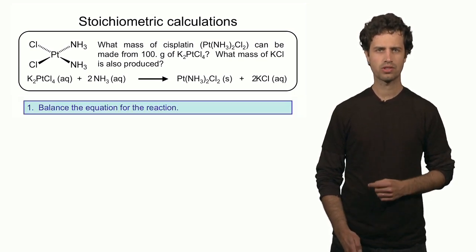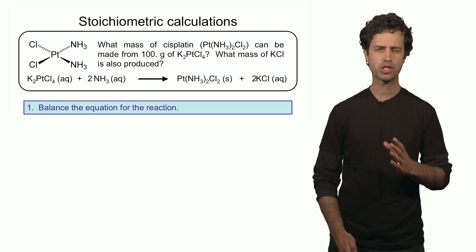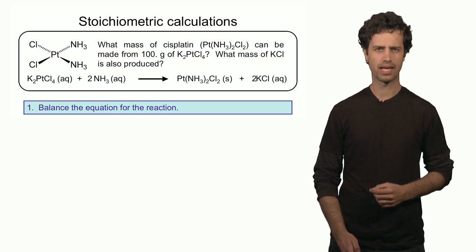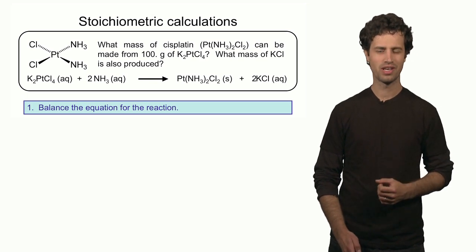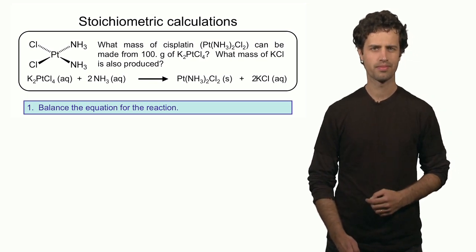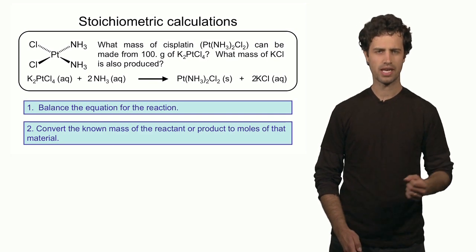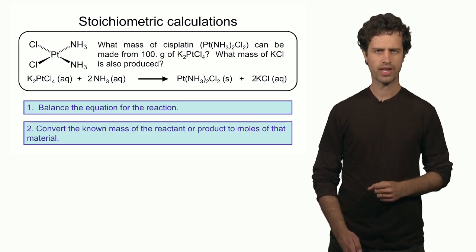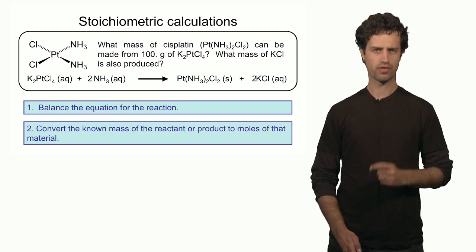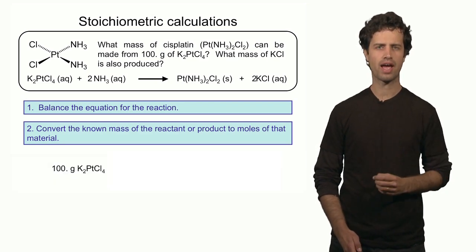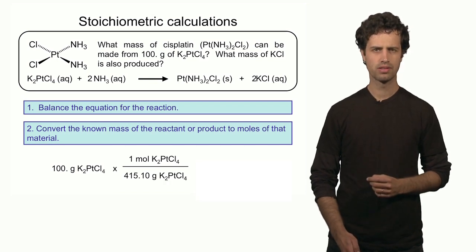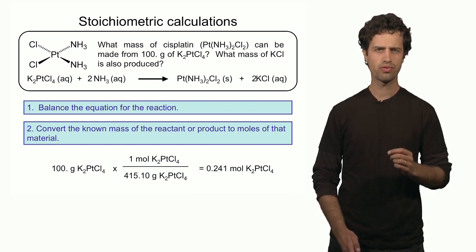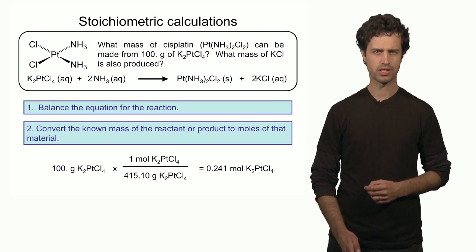The first step is to make sure the reaction is balanced. In this case, we're lucky because it's already balanced, as you can verify for yourself. The second step is to convert the grams of the reagent into moles of the reagent. We have 100 grams of the reagent, and dividing by its molar mass gives us 0.241 moles of the reagent.